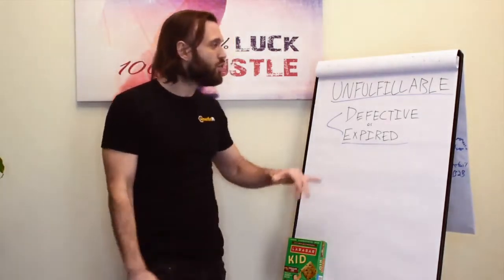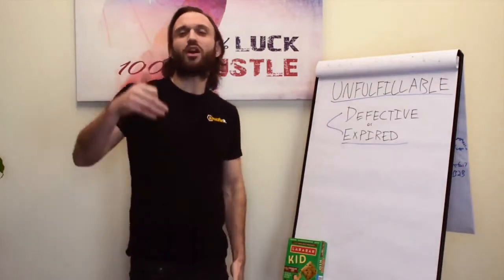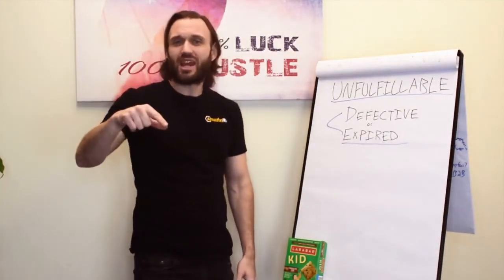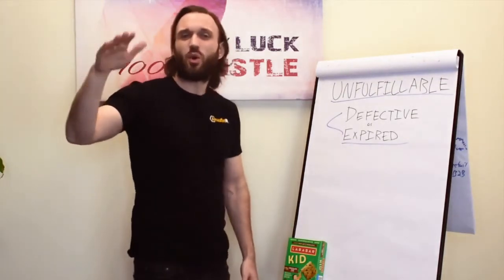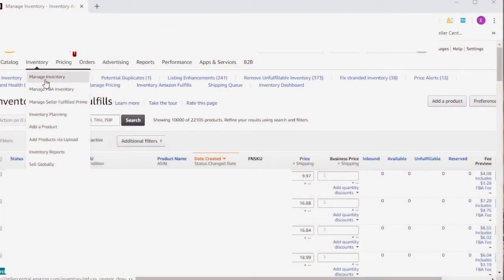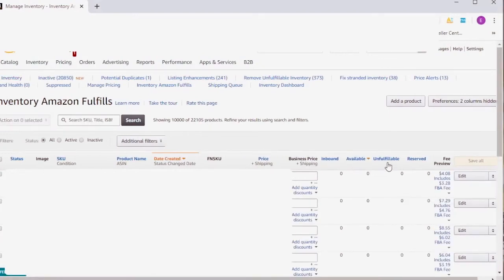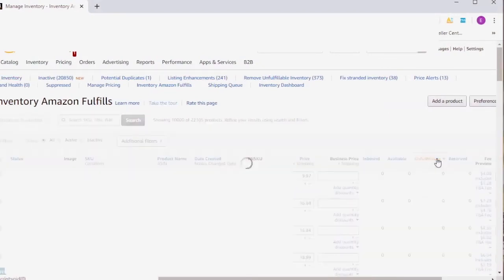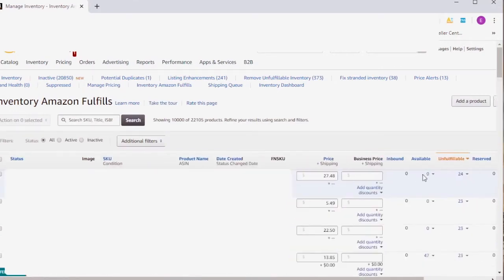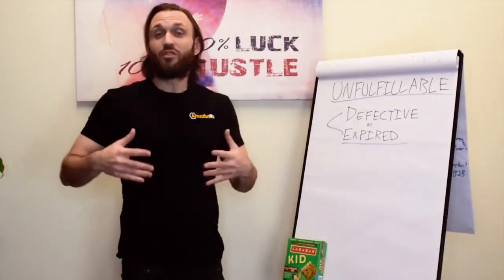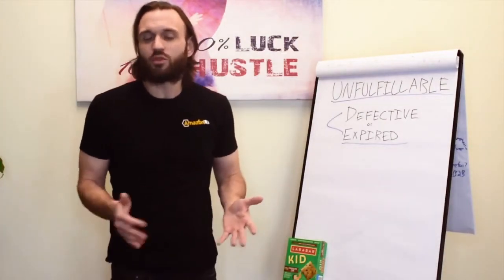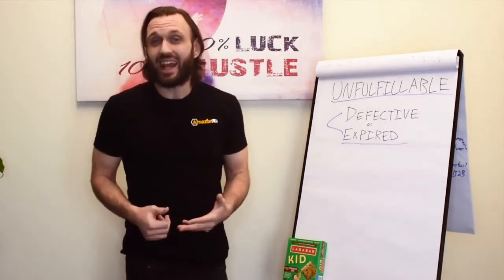Once a week, I go to Amazon Seller Central, go to Manage FBA Inventory, and sort the Unfulfillable Inventory column from largest to smallest so I can see the biggest quantities we have in stock. If a product is considered expired, I check the expiration against our documentation of inventory sent to Amazon to verify — because many times, to no surprise, we find the inventory doesn't actually expire for another 18 months.